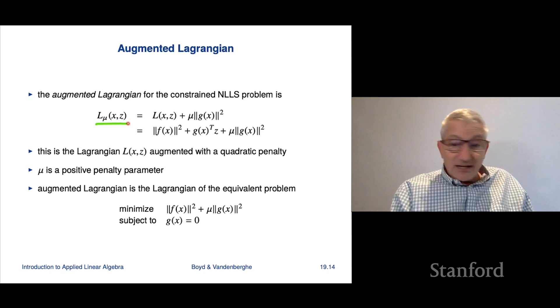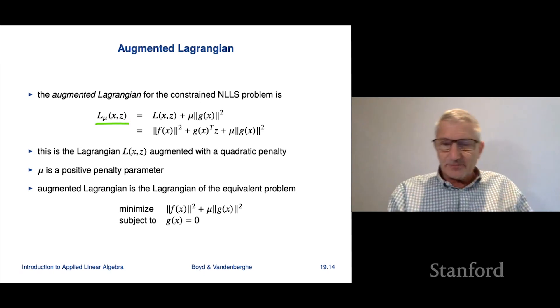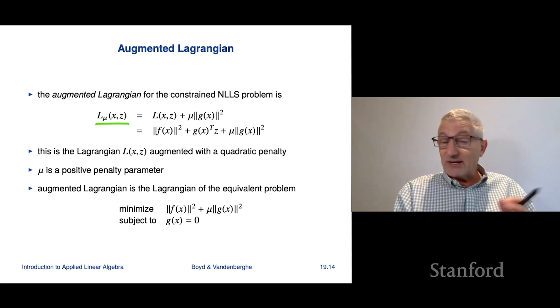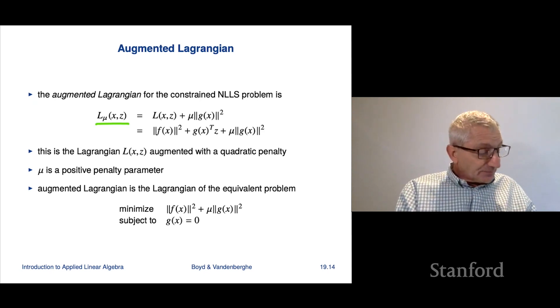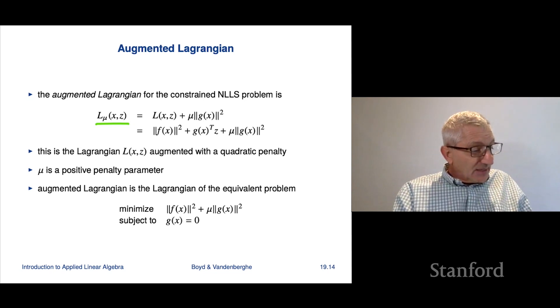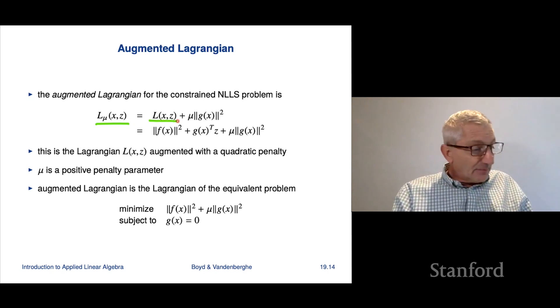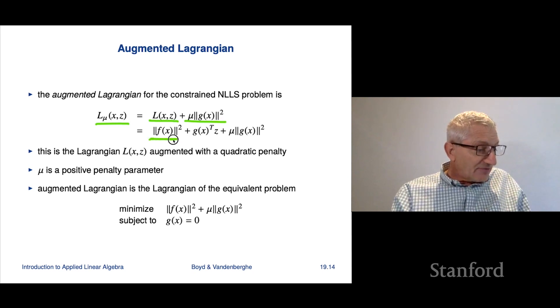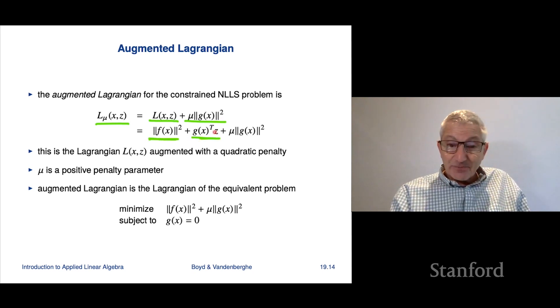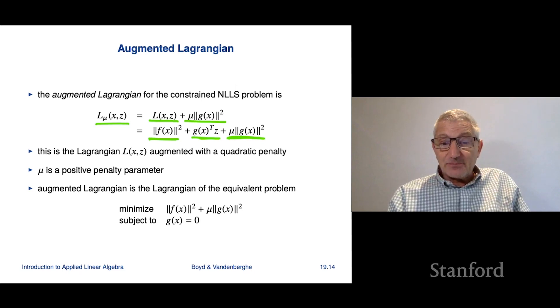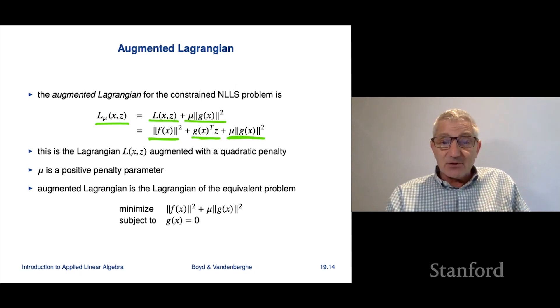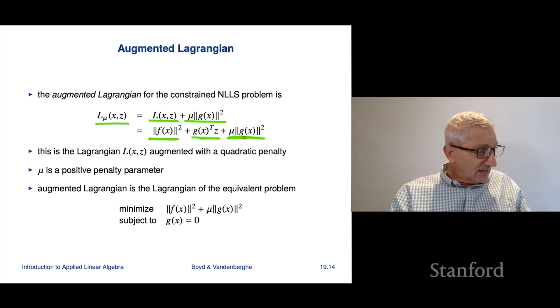This is pretty standard optimization stuff. The so-called augmented Lagrangian is this: it is going to be the original Lagrangian plus mu times g of x squared. That's equal to norm f of x squared plus g of x transpose z. This is the Lagrange multiplier term. And you might even say it's gratuitous, this other term, because if you're feasible, g of x is 0, so this thing is 0.